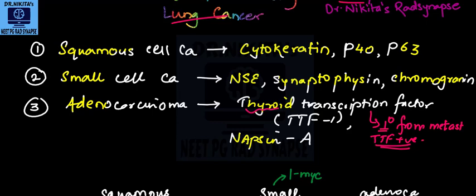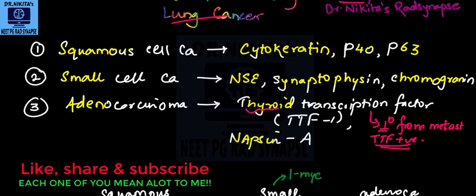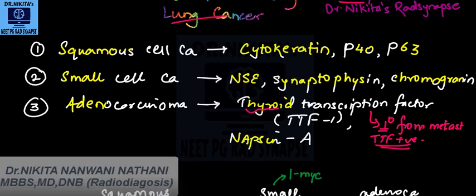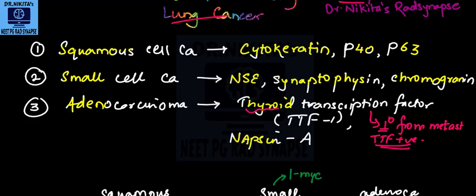So I hope these cheat codes help you to remember the various immunohistochemistry markers. If there is any other difficult list or table that you want to know the cheat codes, the easy ways to remember, which definitely help you to score more in the exam, do let me know in the comments and also you can drop a message on a telegram group, Dr. Nikita's Rad Cynapse. So that's all for today, goodbye, take care, keep studying, keep revising and keep winning. I'll see you in my next video.